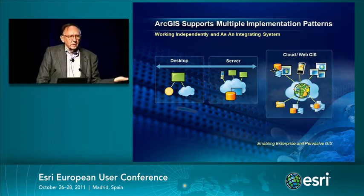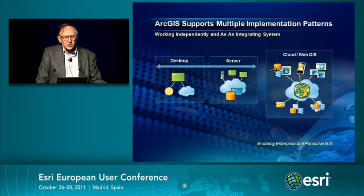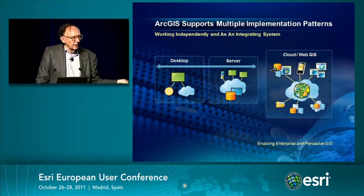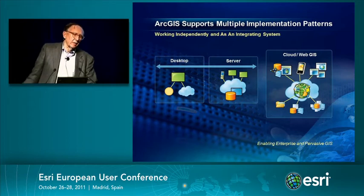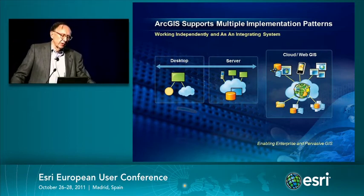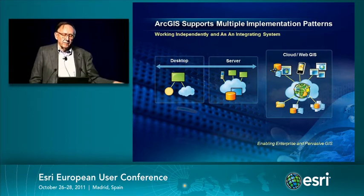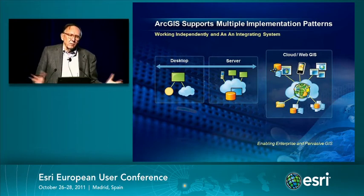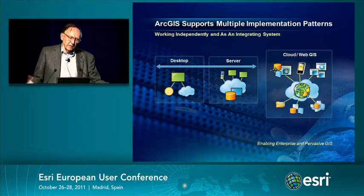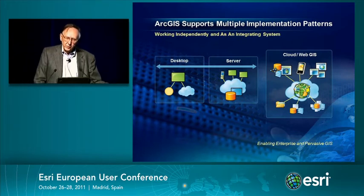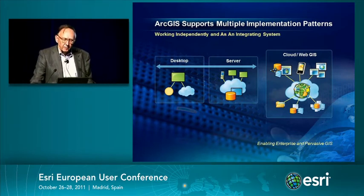People implement it in three basic patterns. The first and largest pattern is the desktop, and there are millions of users who work on the desktop. They have their own data and are now increasingly accessing web services and integrating data off the web. The second big pattern is the server pattern, database pattern, application services pattern, which are more focused in departments or enterprises.